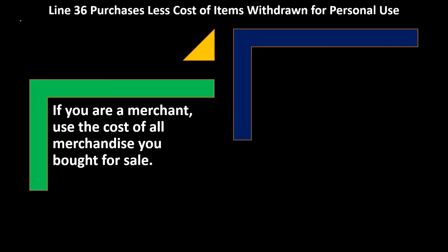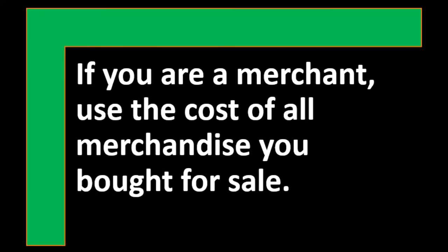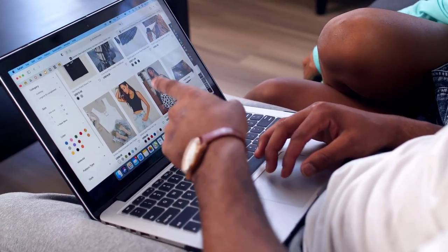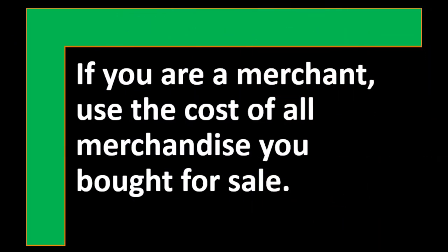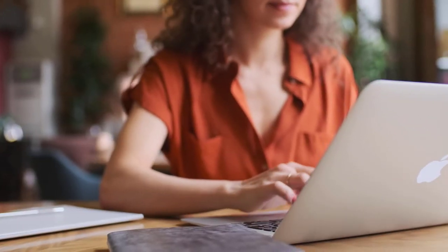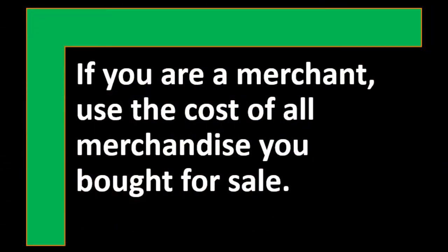Line 36: Purchases less cost of items withdrawn for personal use. If you are a merchant, use the cost of all merchandise you bought for sale. This line captures all your purchases. This is something you might not have directly if you're looking at financial statements from software on a perpetual inventory system — you could run other reports to pick it up, or back into it as the unknown in the equation.